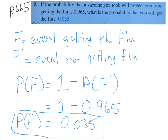So the probability of F, which is the probability of getting the flu, is 0.035. This is fairly basic because they give you one probability and you want the other, so you just do one minus it. We let F be the event of getting the flu, F-prime is not getting the flu. We want P(F), so by the complement formula P(F) = 1 minus P(F') = 1 minus 0.965 = 0.035.